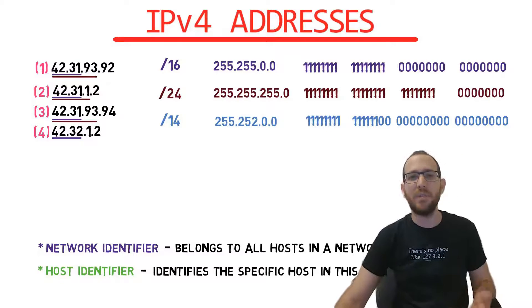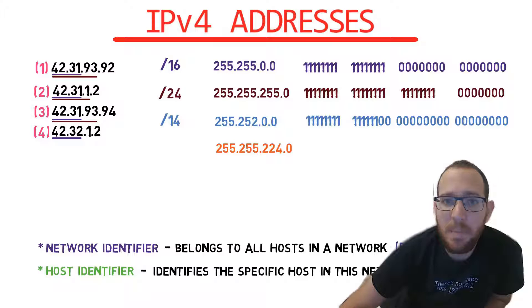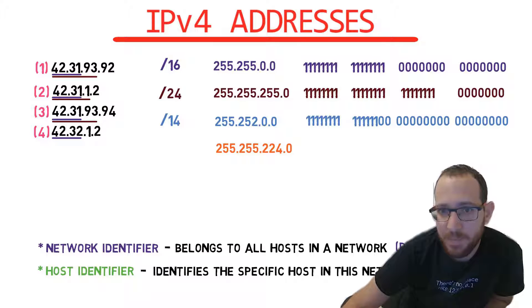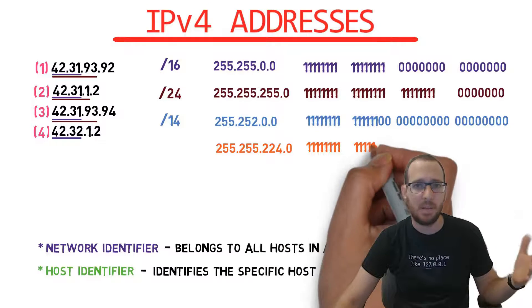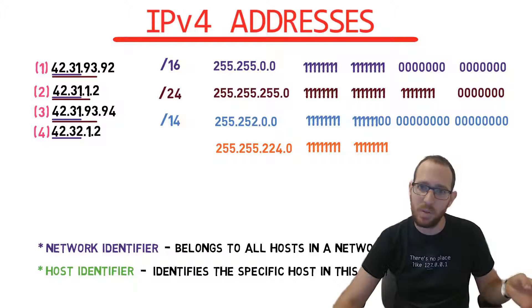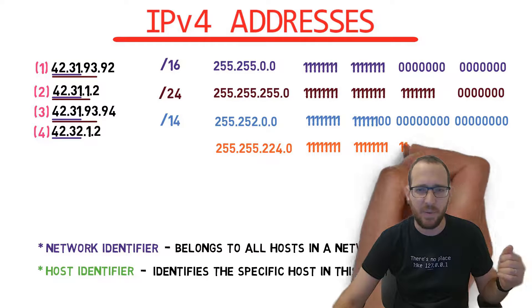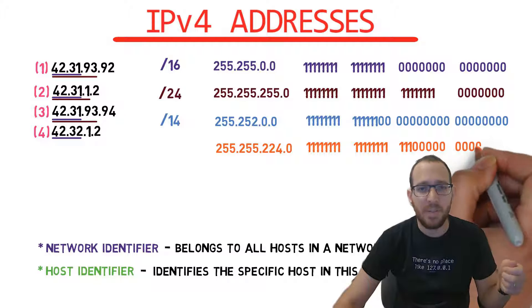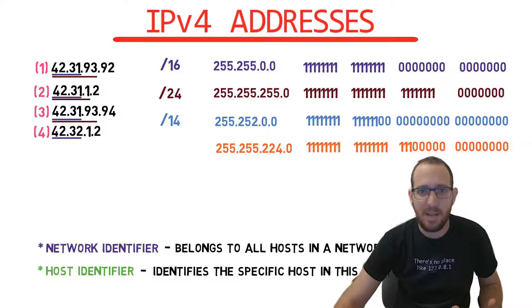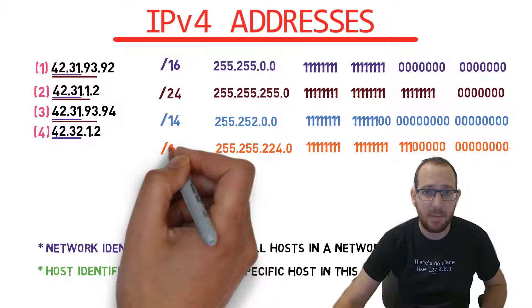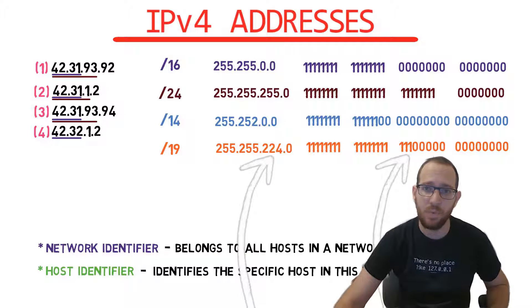Let's try the other way around. We have the subnet mask 255.255.224.0. How many bits represent the network prefix? The first two bytes are clear — we have 16 bits on. Let us convert the third byte into binary: 224 in decimal is 11100000 in binary — three ones followed by five zeros. This means we have 3 additional bits that are on. So we can write the subnet mask as the prefix /19: 16 bits for the two 255 bytes and 3 additional bits for the 224 byte.